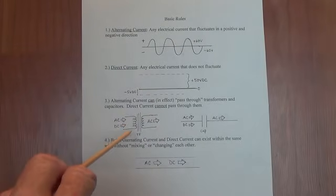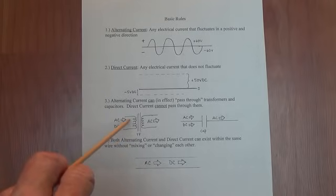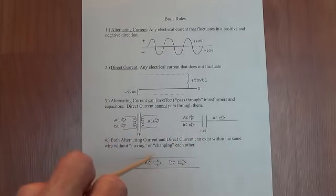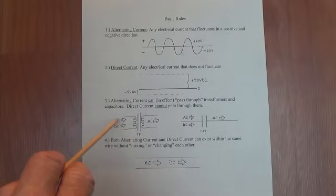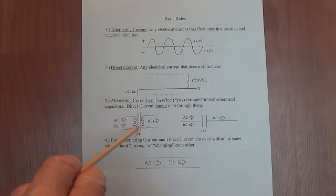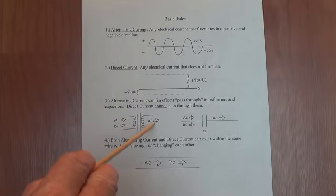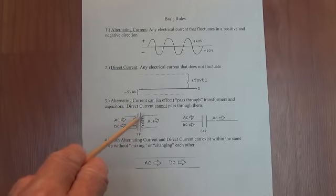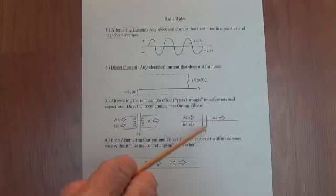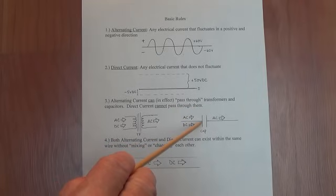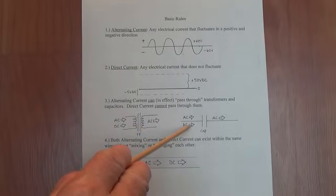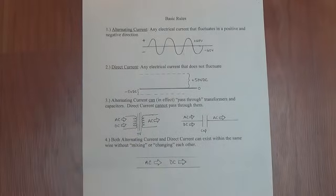Third, alternating current and direct current behave differently in a circuit. AC is able to pass through transformers and capacitors. Now it really doesn't pass through them, but let's just say that if I feed AC and DC to a transformer, only the AC will appear on the other side. It's like a magic trick, somehow it gets from here to here, it doesn't really pass through though as you can see the wires are separated. It's done through induction. Over here with the capacitor, it's the same magic trick. I apply AC and DC to one side of the capacitor, only AC will appear on the other side. So transformers and capacitors effectively block direct current and do not allow it to pass.